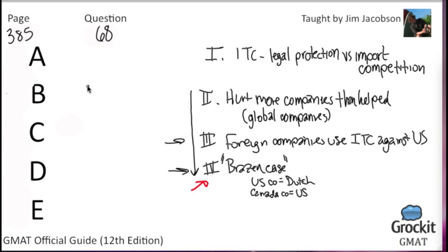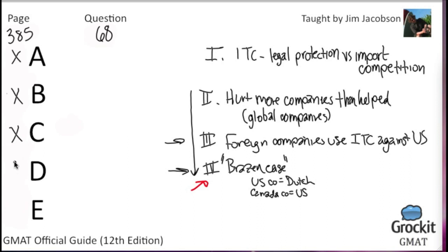Does the passage suggest that US trade laws A will eliminate the practice of dumping products in the United States? No — if it would eliminate the practice, they wouldn't have people claiming it, and people are clearly still alleging that it's going on. B: will those laws enable manufacturers in the United States to compete more profitably outside the United States? Again, what goes on in foreign countries is outside the scope of the passage. C: they will affect United States trade with Canada more negatively than trade with other nations. This one's meant to catch the skimmers, because Canada gets mentioned in the fourth paragraph, but nobody in the passage cares about Canada more than other countries.